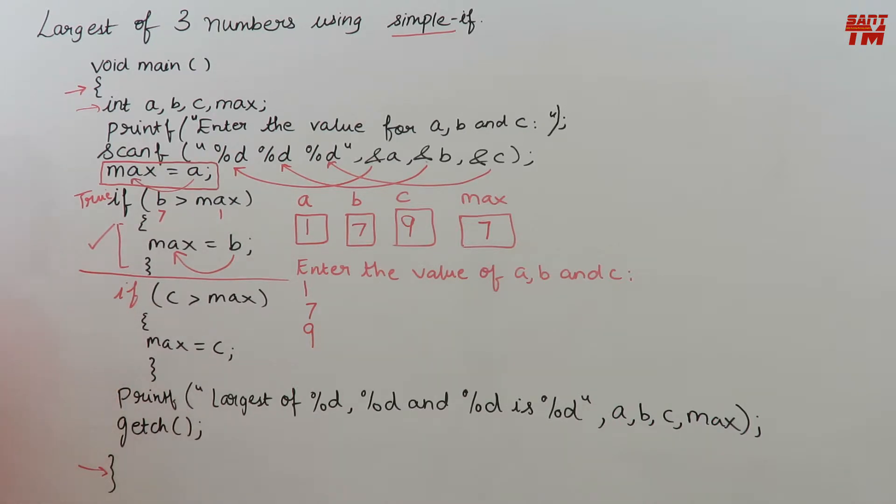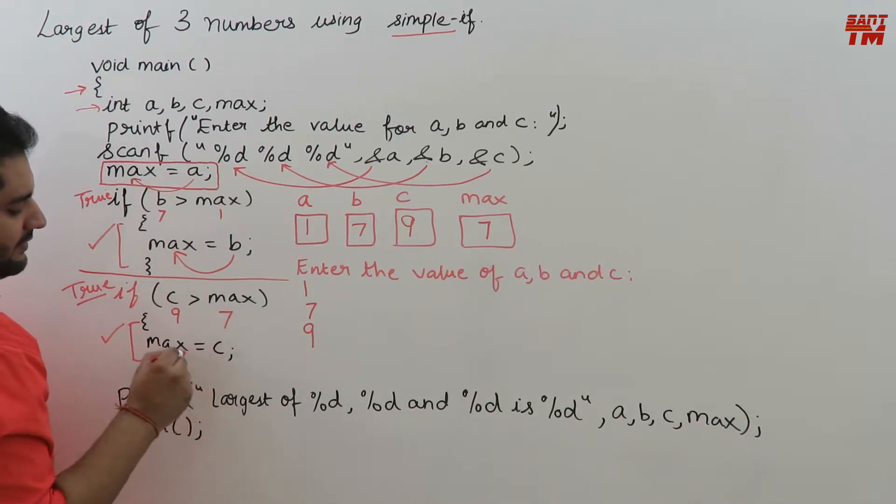Now again when if statement is encountered. If c is greater than max. Yes, c is having 9 and max is having 7. Again the if condition is true. When the if condition is true, its block will get executed. Max is equals to c. So c's value will get copied to max. c is having 9 and max will thus now hold 9.